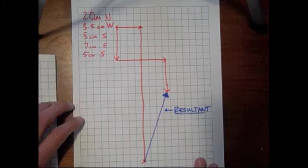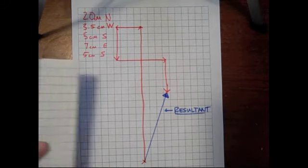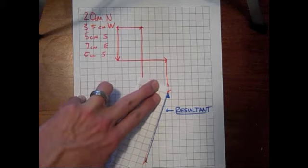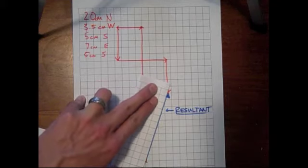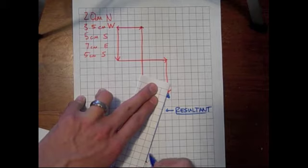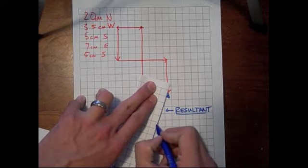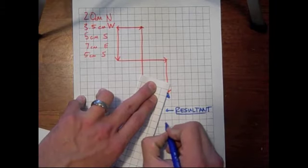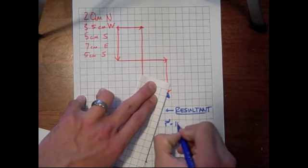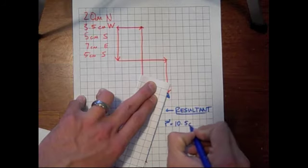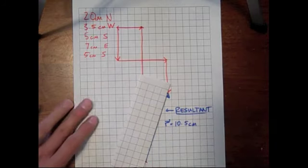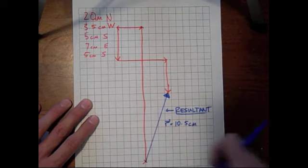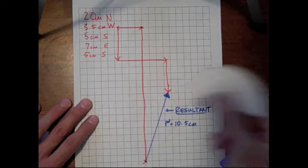Now, it doesn't do too much for us to have this vector and not know how long it is. So we're going to take just the same centimeter graph paper and go ahead and count and see how long it is. So 1, 2, 3, 4, 5, 6, 7, 8, 9, 10, and it looks like 10 and a half. So our resultant vector is 10.5 centimeters, but we're not done yet, because if we want that to be a vector, we're going to need the magnitude, which is the length of the vector, as well as the direction.